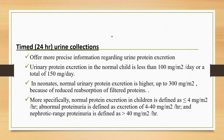Another way of measuring proteinuria is by timed or 24-hour urine collection, which offers more precise information than a random dipstick test. Normal urinary protein excretion in children is less than 150 mg per day, or less than 100 mg/m² per day. In neonates, normal urinary protein excretion is higher due to reduced reabsorption of filtered proteins. More specifically, normal protein excretion is defined as ≤4 mg/m²/hour, abnormal proteinuria as 4–40 mg/m²/hour, and nephrotic range proteinuria as greater than 40 mg/m²/hour.